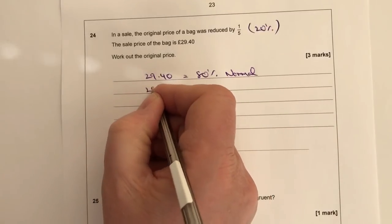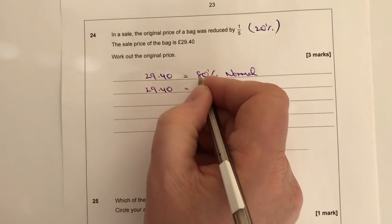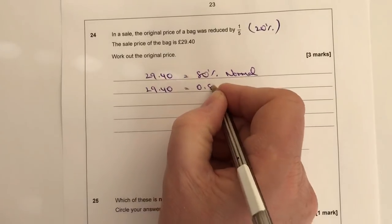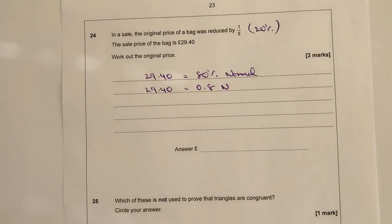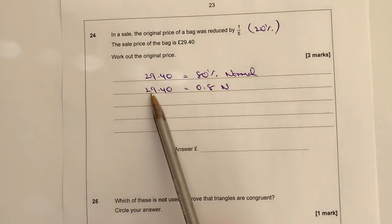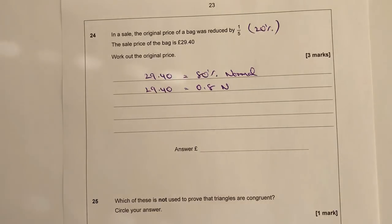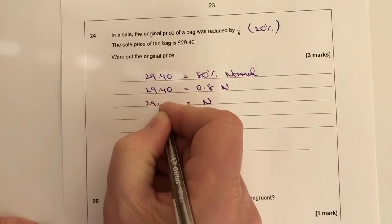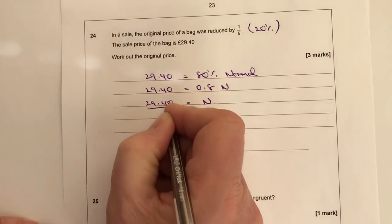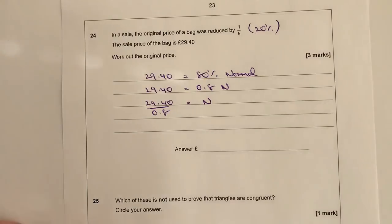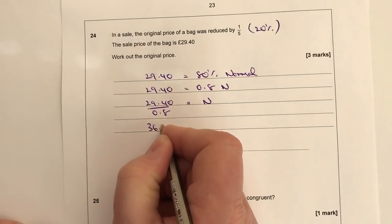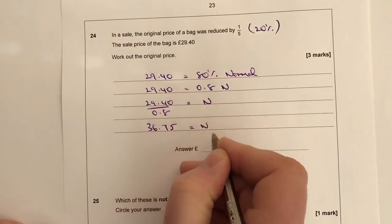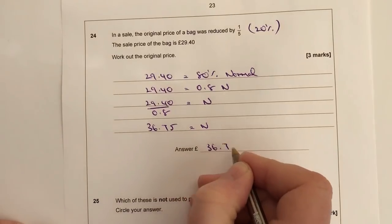So therefore it's actually equal to 80% of the normal price. Now in order to do this, I need to write rather than 80%, I'd write it as a decimal, and rather than writing normal, I'm just going to write N. So using a little bit of manipulation here, I've got £29.40 equals 0.8 of N. So if I want to work out N, I just simply divide through by 0.8. So if I divide through by 0.8, I get my normal price of £36.75 equals normal. So that's going to be £36.75.